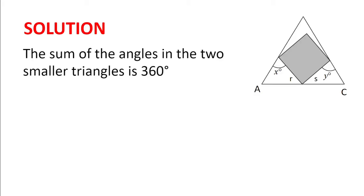Well, the sum of the angles in the two smaller triangles is 180 plus 180, which equals 360 degrees. The two corner angles, angle A and angle C, are both 60 degrees because the larger triangle is equilateral.